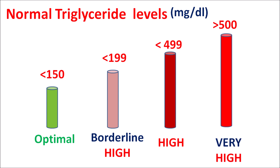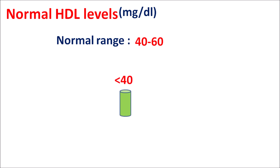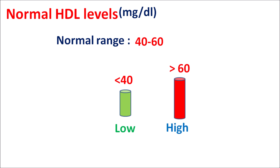HDL is considered good cholesterol. The normal range is between 40 to 60 mg/dL. When HDL levels are less than 40 it is considered low, and when above 60 it is considered high. HDL levels should be maintained between 40 to 60 so that it can protect against the formation of atherosclerosis.